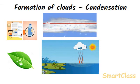The tiny water droplets join to form bigger droplets of water. These drops of water fall on the earth in the form of rain.